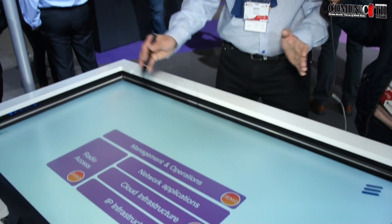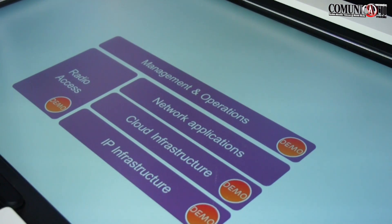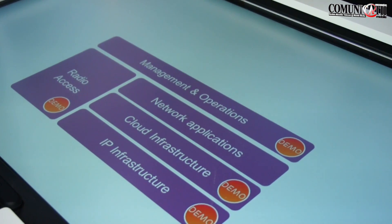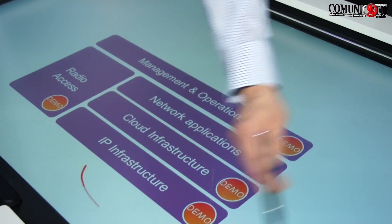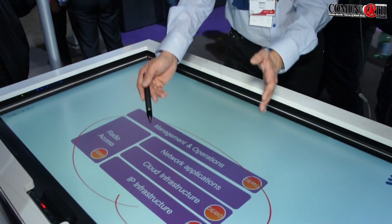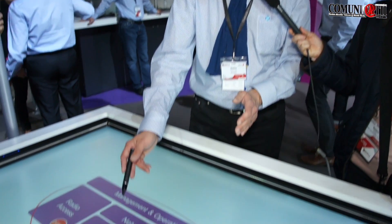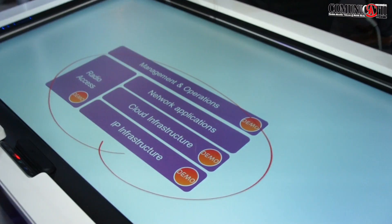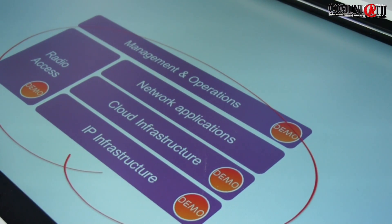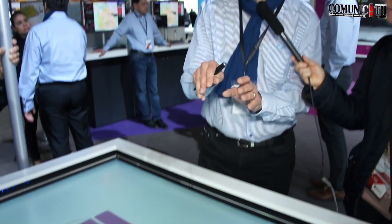Now we can look at how we're going to address this on the technical side. We cannot really build one network per use case — that would be ridiculously expensive. So we see one infrastructure handling all of this, consisting of not only radio, but also IP infrastructure, cloud, operation management, and network applications. Some applications may need to run close to the radio for latency reasons; some can run a little bit further off. And then in the cloud, you can set up multiple logical slices, in the same way as you can set up multiple virtual computers on top of a physical computer.